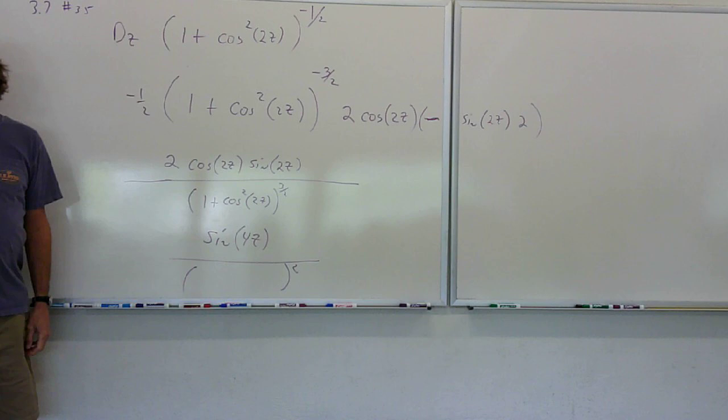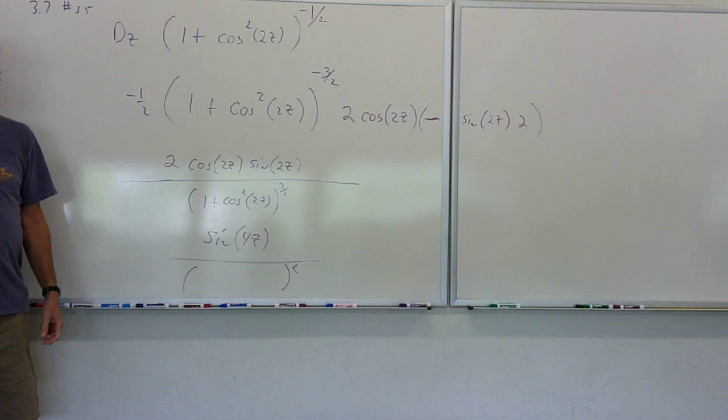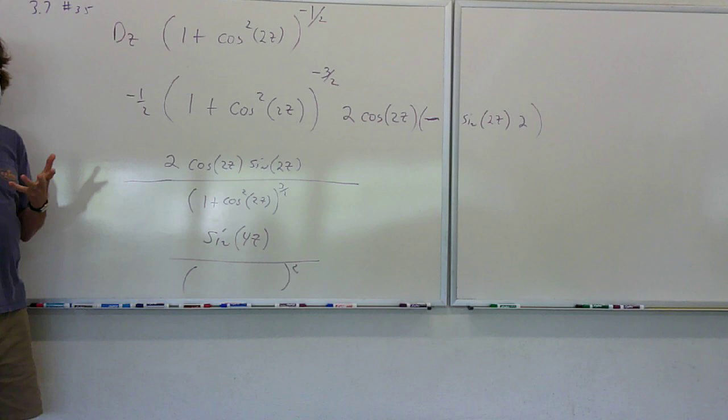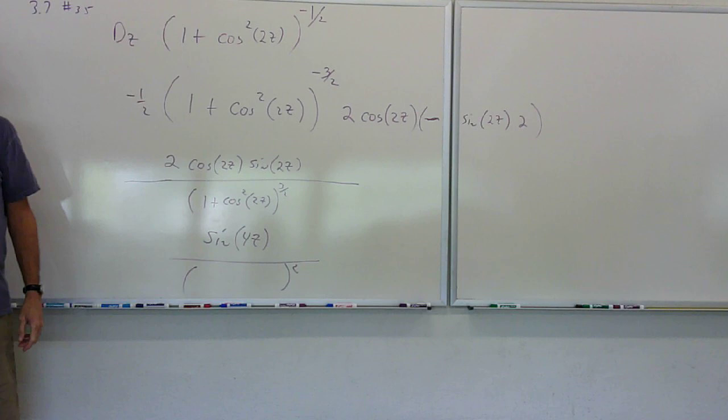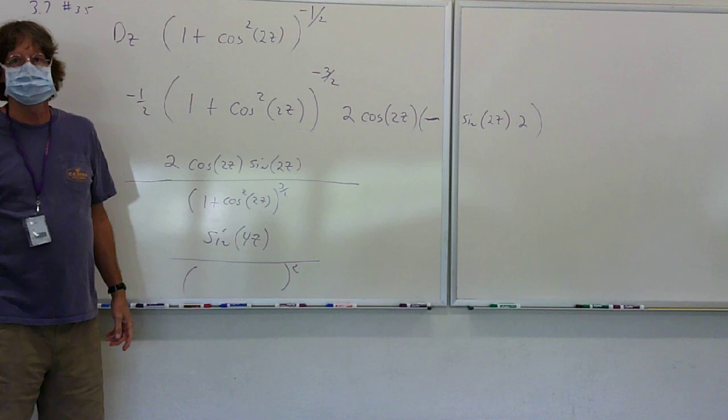And you notice we're using that one a lot. That one shows up a whole lot, because anytime you take the derivative of cosine squared or sine squared, you get a setup for that rule. Think about it. You take the derivative of sine squared x, you get two sine x cosine x. You take the derivative of cosine squared x, you get two cosine x negative sine x. So that rule is always coming about. I'm waiting to see if there's any thoughts on that.